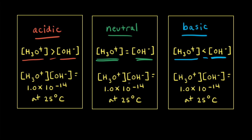The equation [H3O+] × [OH-] = Kw = 1.0 × 10⁻¹⁴ at 25°C holds true whether you are dealing with an acidic solution, a neutral solution, or a basic solution. I'll call this the Kw equation from now on.